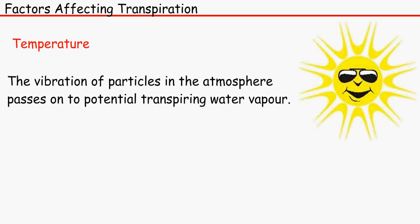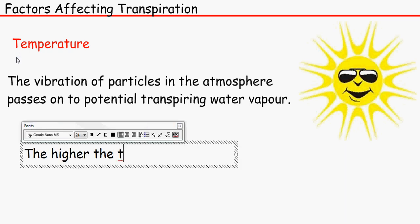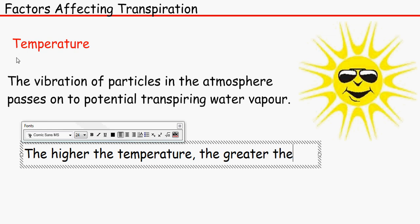So therefore the water vapor inside the spongy mesophyll, like on the insides of it, the spaces vibrate more, and therefore it will be lost more. So the higher the temperature, the greater the rate of transpiration.